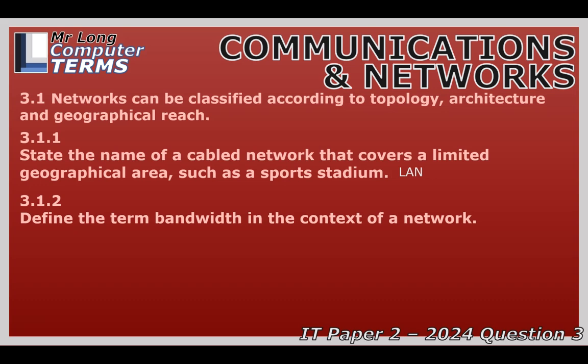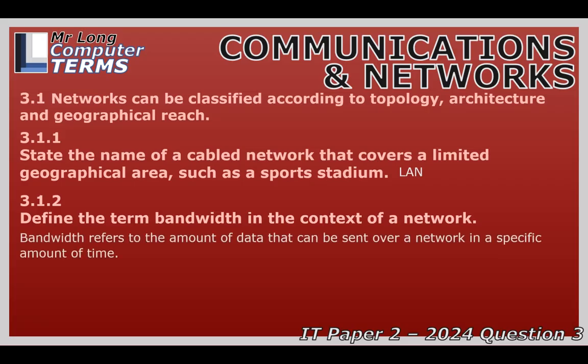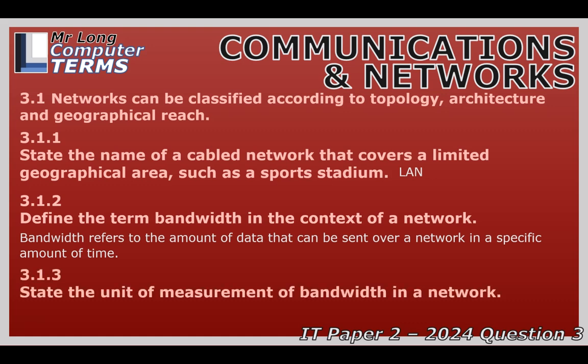Let's switch from physical layout to network speed. We hear terms like 'fast internet' all the time, but what are we actually measuring? Bandwidth is essentially the capacity of your connection — the maximum amount of data that can travel over a network in a set amount of time. Think of it like a highway: a wider highway can handle more cars, or data, at the same time. We measure bandwidth in bits per second — BPS — then KBPS for kilobits, MBPS for megabits, and GBPS for gigabits per second. Internet providers usually talk in MBPS. But there's also latency — the time it takes for one packet to get from point A to point B. You could have a massive highway, but if travel time is slow, video calls or gaming can still feel sluggish.